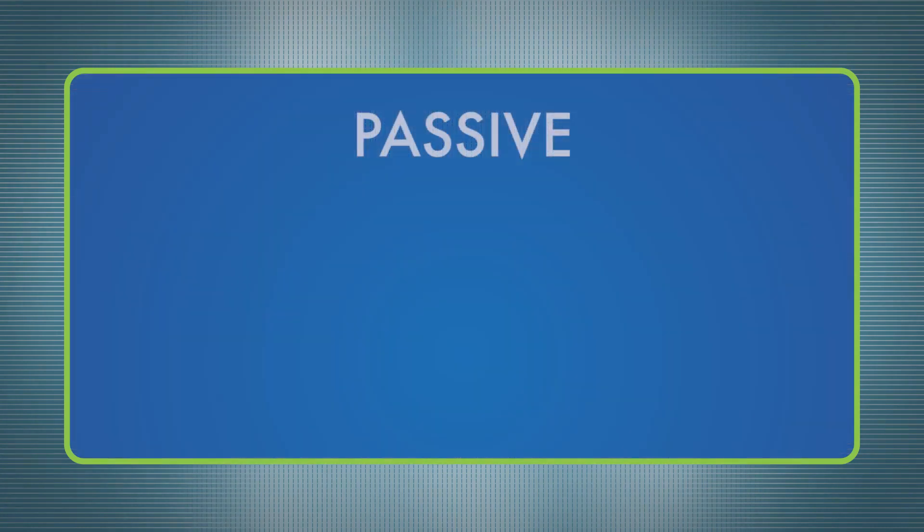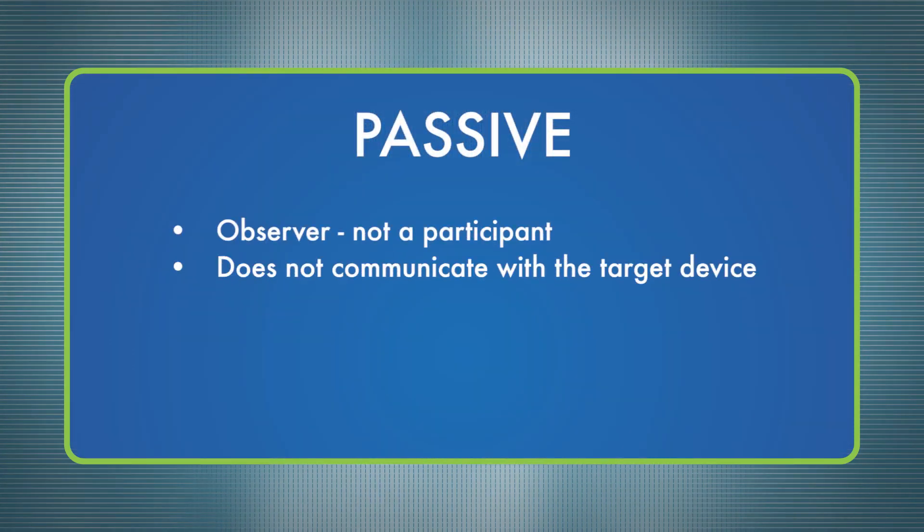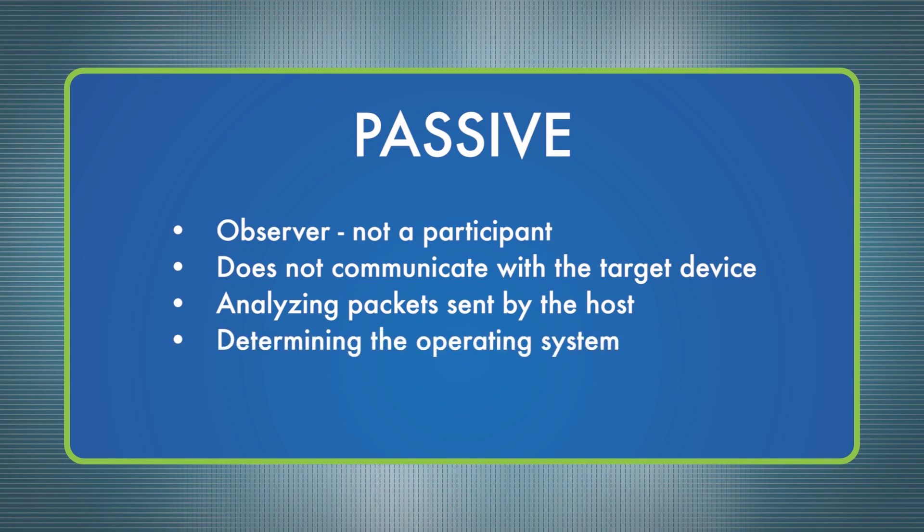There are two types of OS fingerprinting processes, passive and active. A passive OS fingerprinter is an observer, not a participant, within network traffic. He does not communicate with the target device. This process entails analyzing packets sent by the host and determining the operating system. This technique tends to be less accurate than active fingerprinting.